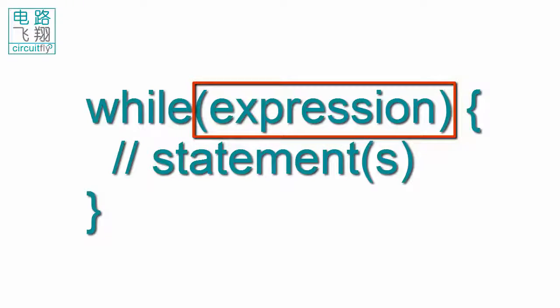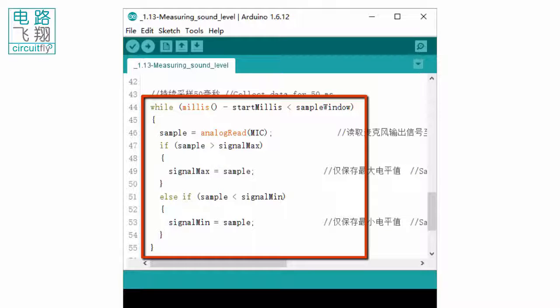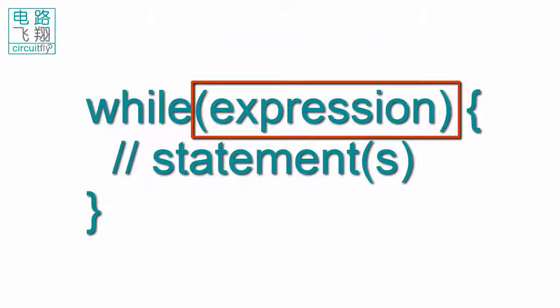表达式可以是变量,也可以是外部某些条件。While loops will loop continuously and infinitely, until the expression inside the parentheses becomes false. Something must change the tested variable, or the while loop will never exit.